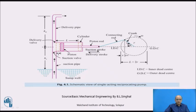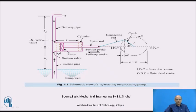The crank rotates, and the connecting rod connected to it converts the rotary motion into reciprocating motion. There are two extreme positions for the piston: the inner dead center (IDC) position and the outer dead center (ODC) position. The piston has the extreme right-hand position when it reaches the outer dead center, and the extreme inside position when it reaches the inner dead center.